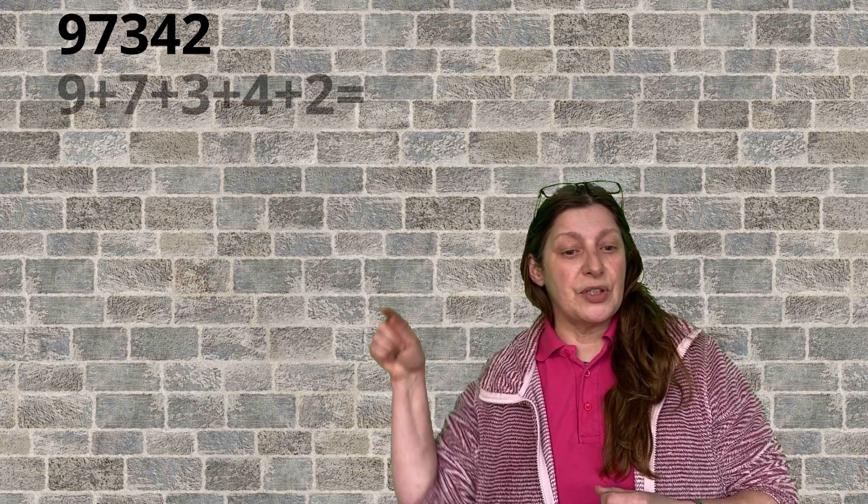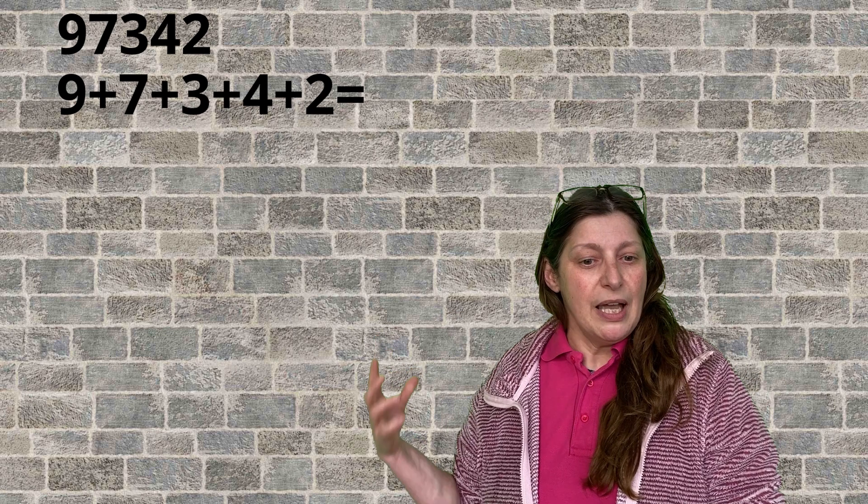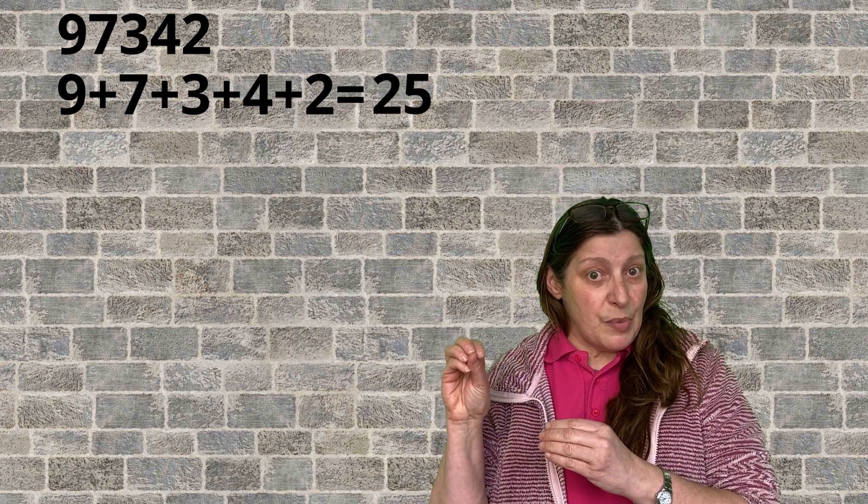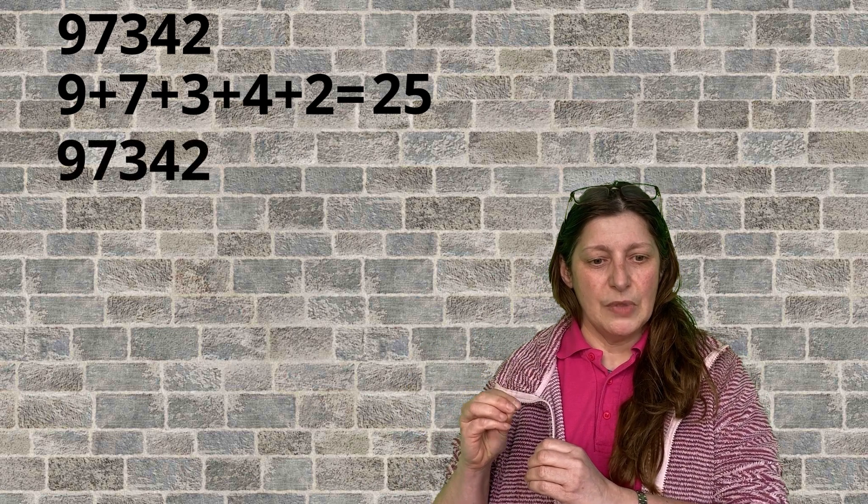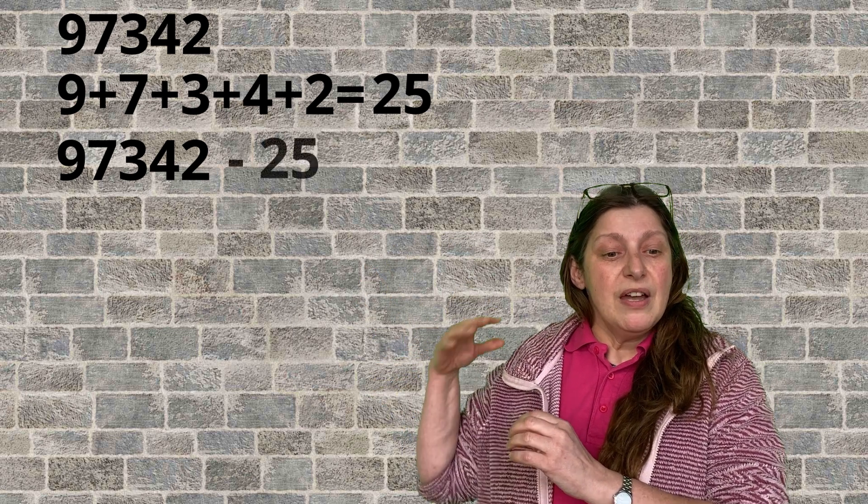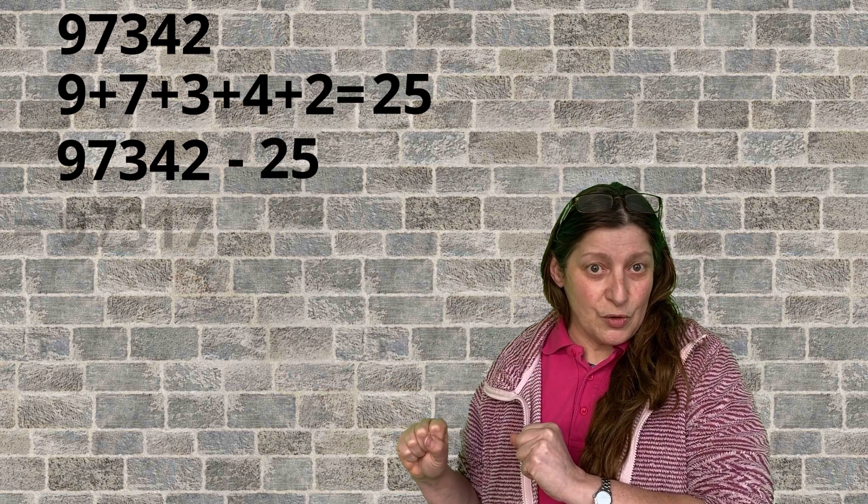So, the first thing you need to do is think of a five-digit number. Any five-digit number. So, I don't know, maybe I'll choose 97,342. And what you need to do is you need to add all the digits together. So, 9 plus 7 plus 3 plus 4 plus 2. And that makes 25. You're going to take that number, you're going to take it off that first number. So, 97,342 take away 25, that's 97,317.